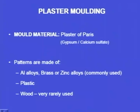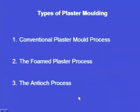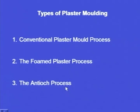The patterns are made up of aluminum alloys, brass, or zinc alloys in most cases. Sometimes plastic is also used and wood is very rarely used. There are three types of plaster moulding: conventional plaster moulding process, the formed plaster process, and the Antioch process.